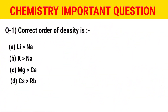The first question is: what is the correct order of density? The options are: lithium is greater than sodium; potassium is greater than sodium; magnesium is greater than calcium; and cesium is greater than rubidium. The correct option is C — magnesium is greater than calcium.